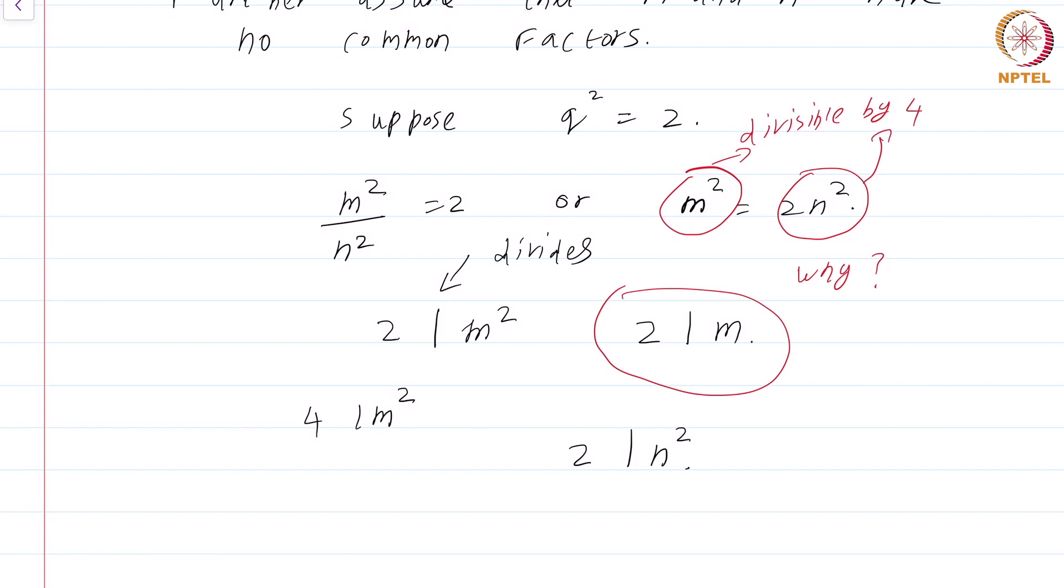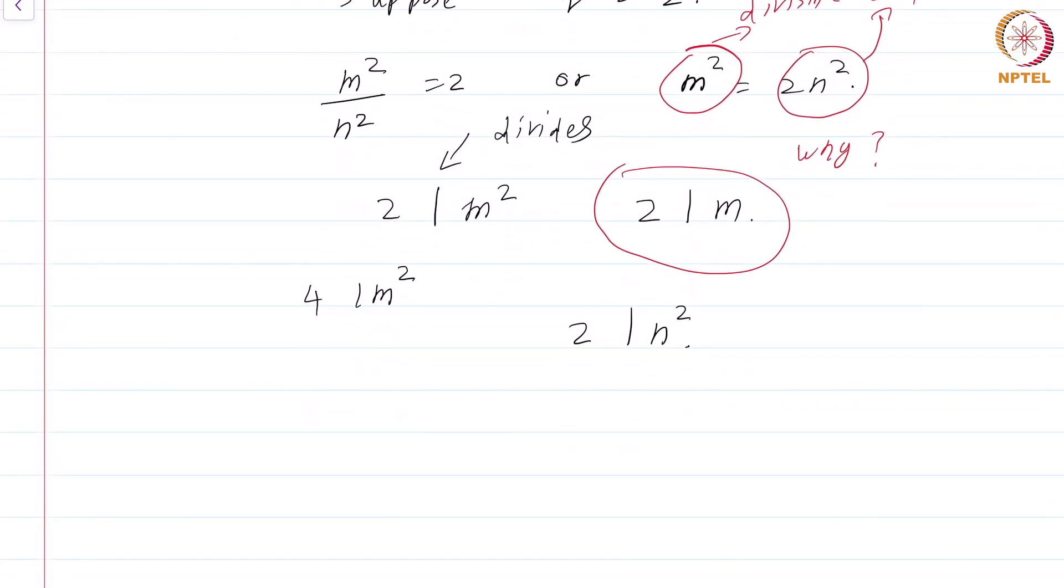Because 2 divides n², by the same logic 2 divides n and hence 4 divides n². This is actually not going to be useful in the proof. All I need is that 2 divides n. But that means 2 divides m and 2 divides n as well.